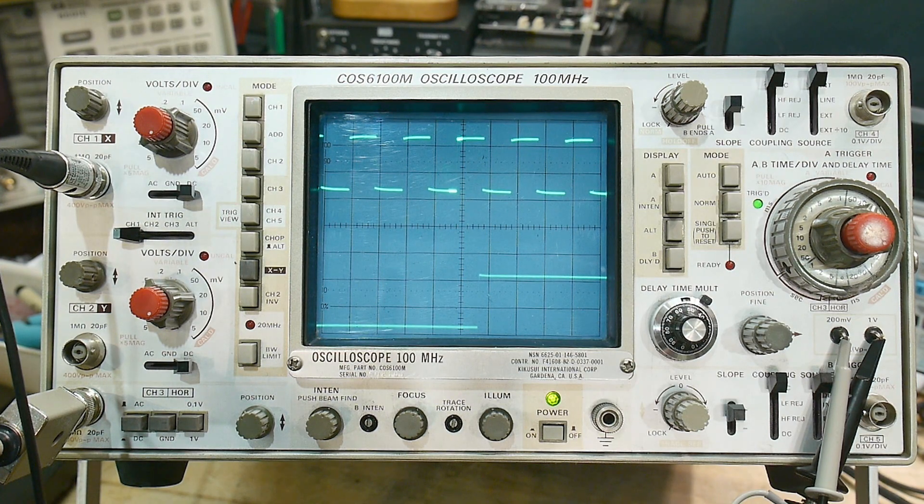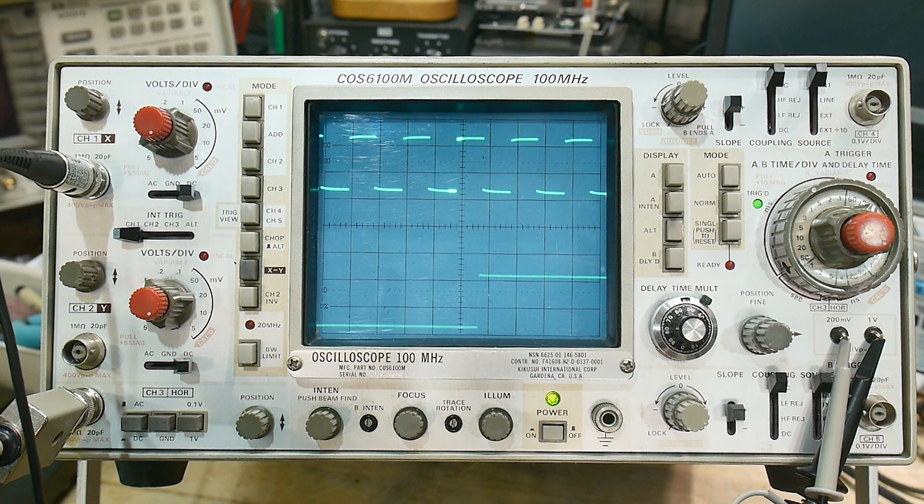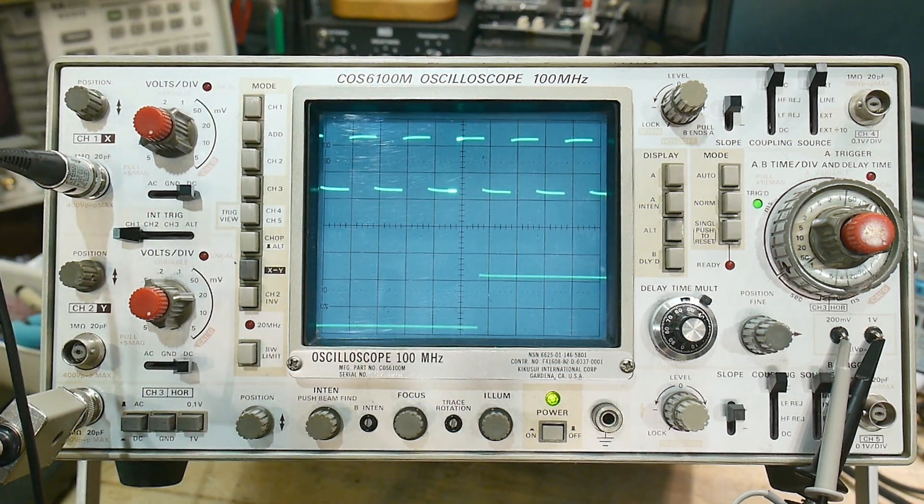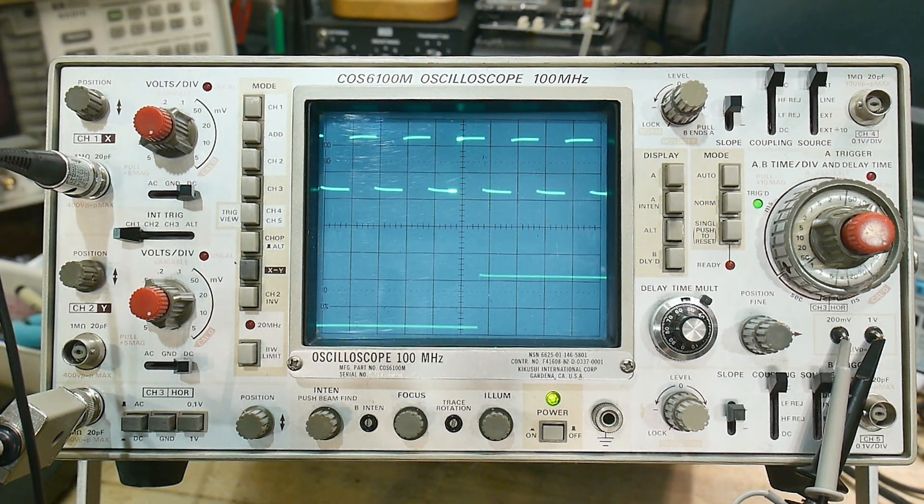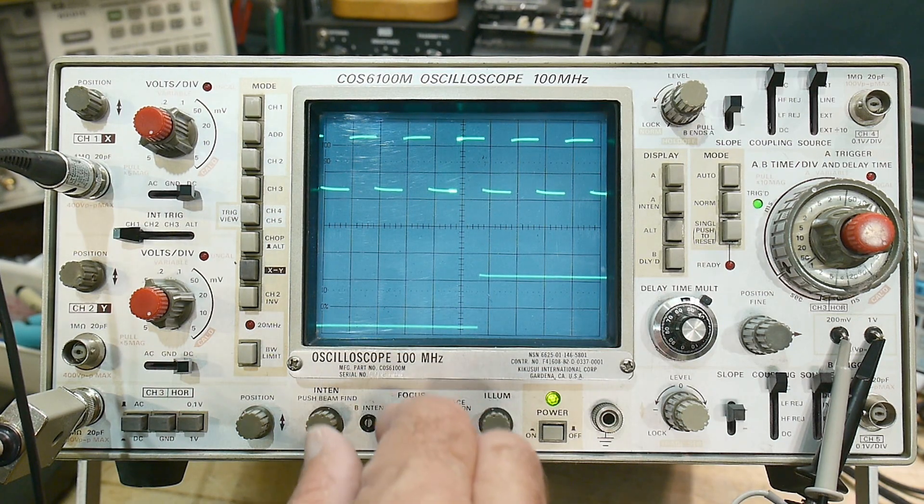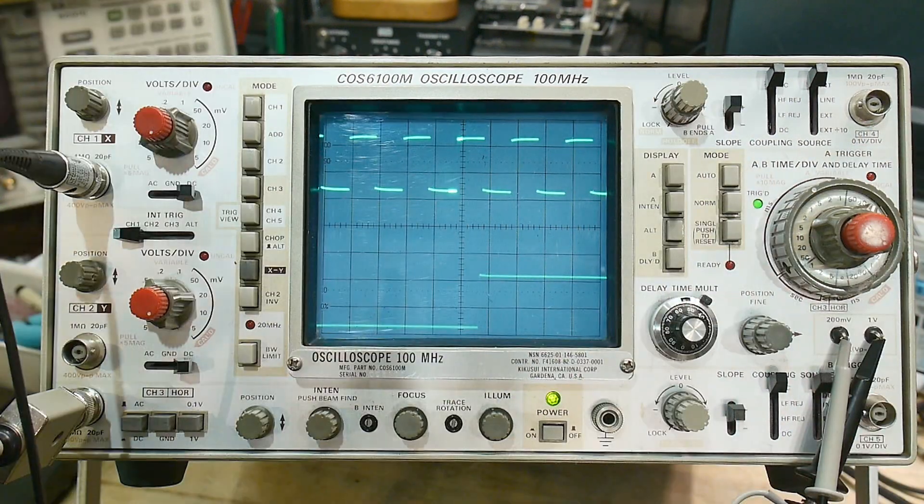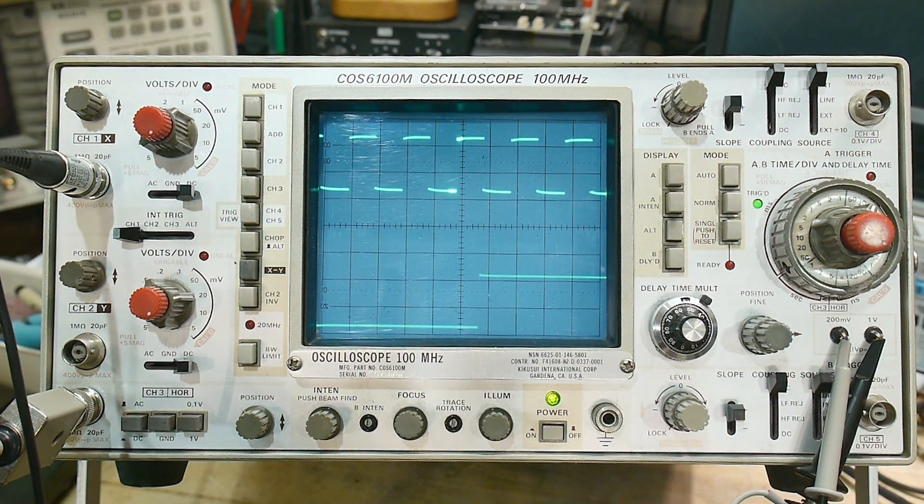But I do have a working Kikusui 6100M, a COS 6100M. It's a really nice scope. It really is. It's very sharp, really nice display. It kind of feels like a Tektronix, although not quite. It's more like a Hitachi scope. I don't know if everybody was like cross pollinating, but yeah, it feels like a Hitachi scope.